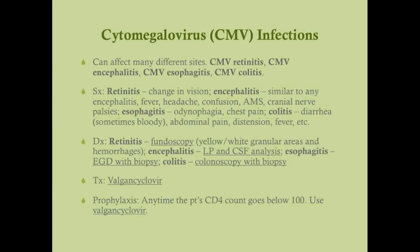Cytomegalovirus (CMV) infections can affect multiple sites: CMV retinitis, CMV encephalitis, CMV esophagitis, and CMV colitis — patients may have one or more. CMV infects immunocompetent people but is usually asymptomatic. It is also an opportunistic infection that can be transmitted congenitally: since the developing fetus lacks an immune system, maternal CMV — even if asymptomatic — can cause significant problems for the baby.